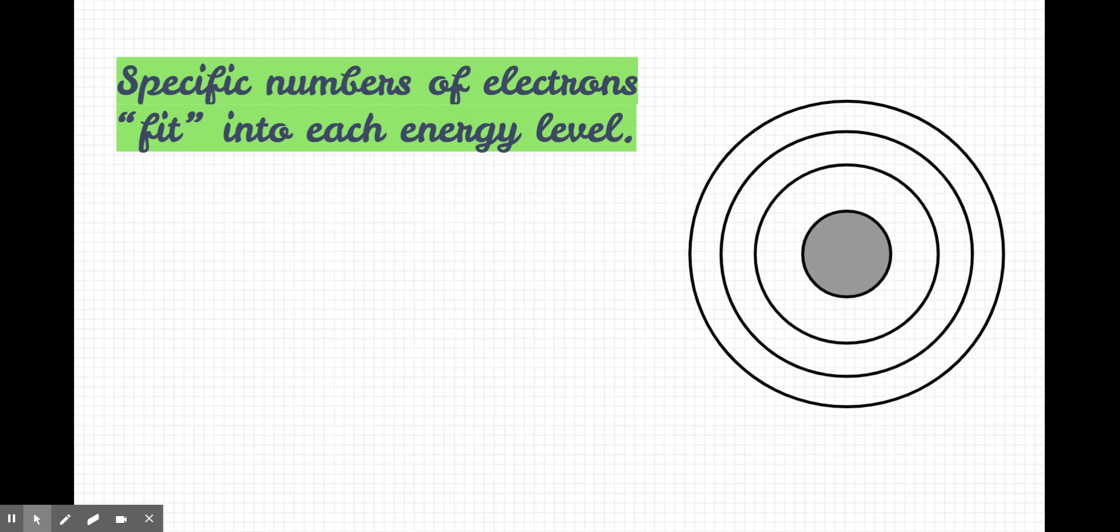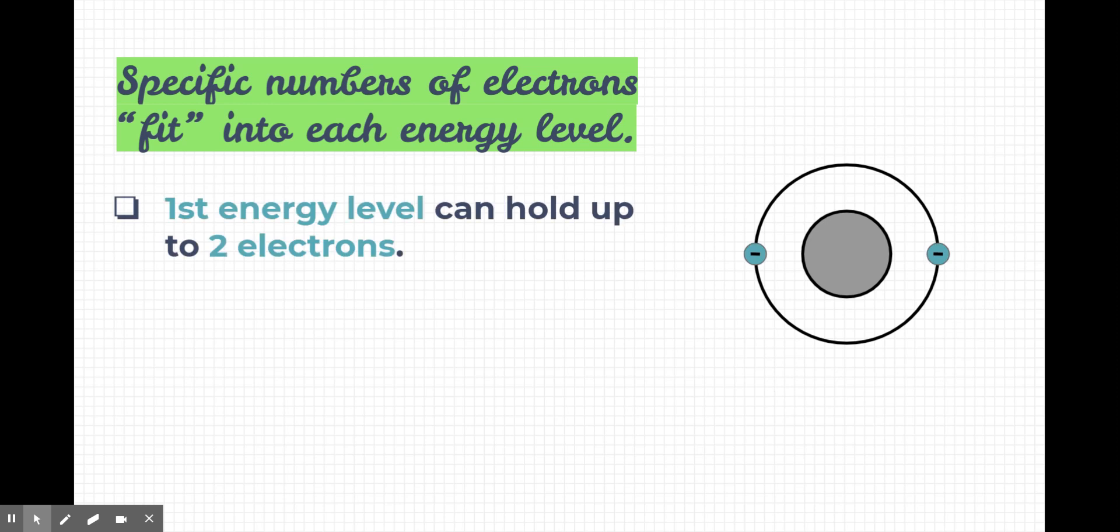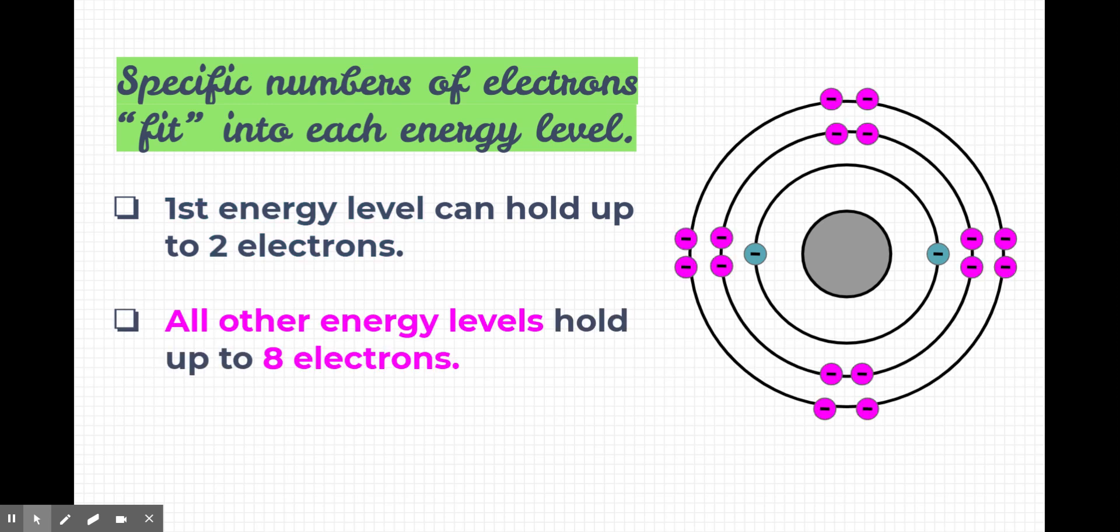Specific numbers of electrons fit into each energy level. They're organized into each of these levels. The first energy level can hold up to two electrons. If the atom has more than two electrons, it spills over into the other energy levels. And as each energy level fills up, the electrons just go to the next one. The second and third energy levels can hold up to eight each.